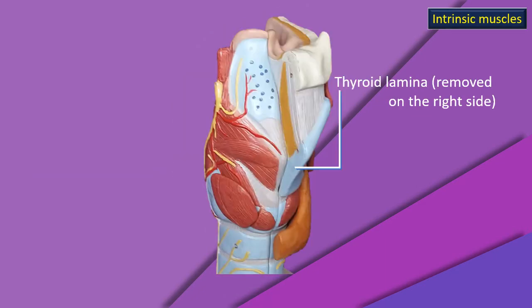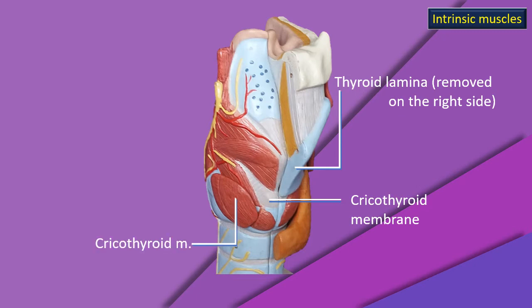Now, back to another model. We are looking at an anterolateral view of the larynx model. Note particularly the thyroid lamina on the left side — the corresponding right-side lamina has been removed, allowing us to see deeper structures in greater detail. The cricothyroid membrane is visible, and the blue structure below it is the cricoid ring. Extended posteriorly, that same blue structure is the cricoid lamina. The muscle covering and arising from the external surface of the cricoid ring is the cricothyroid muscle.